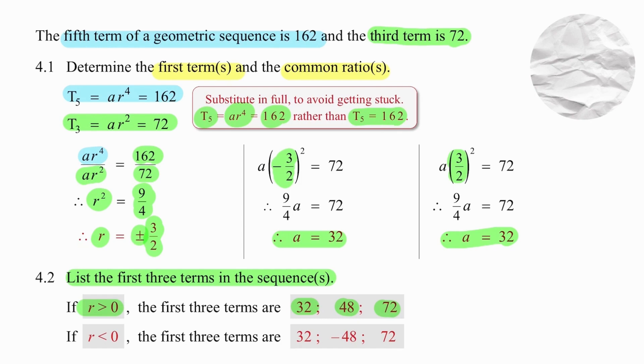When on the other hand, I have a negative ratio, my terms will alternate between positive and negative. So I'll start with a equal to 32, multiply by negative 3 over 2, changes the middle term to a negative 48, multiply again by negative 3 over 2 and the third term is 72. So we have two different sequences because we have two different ratios.